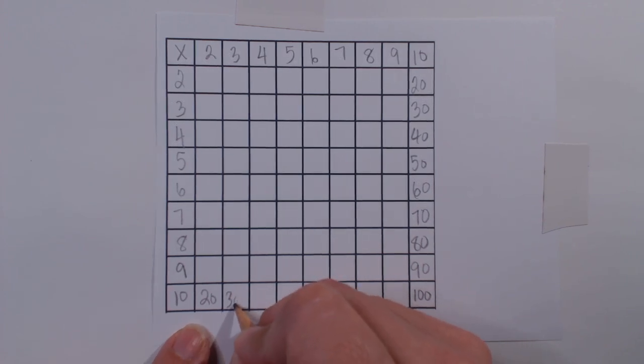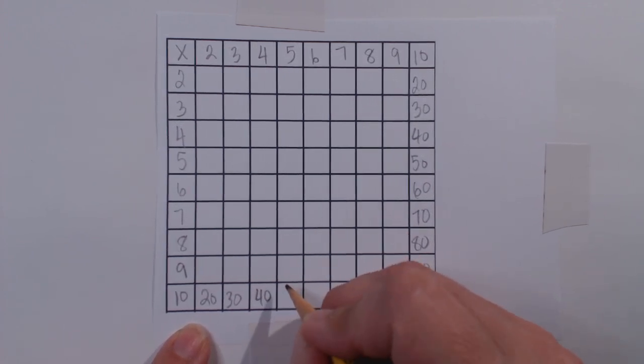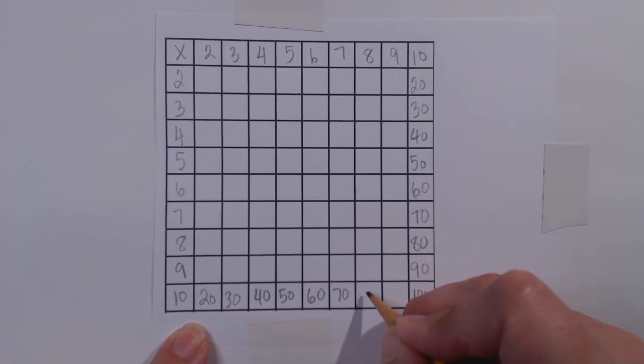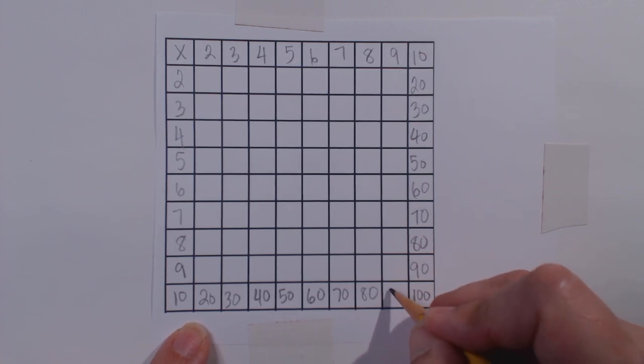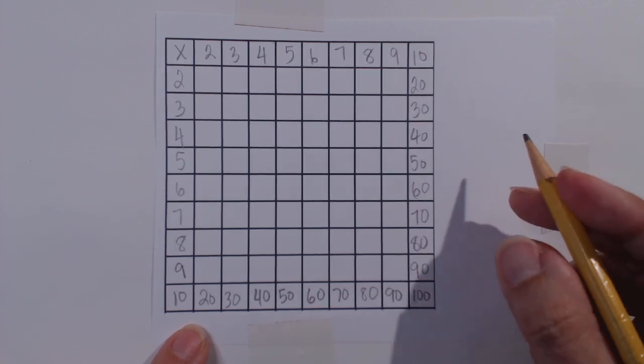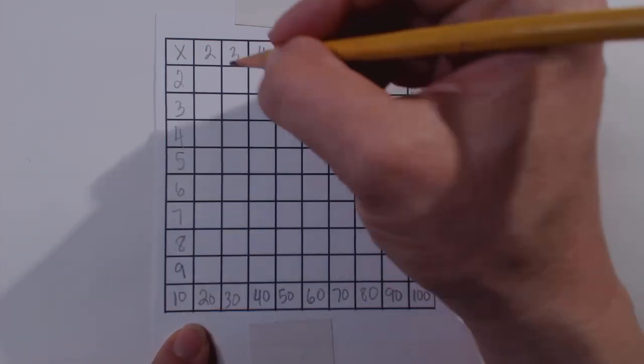Doing this helps students go quicker and to have checkpoints along the way as they do the more, excuse me, the lesser known facts. So we did our tens down and across.